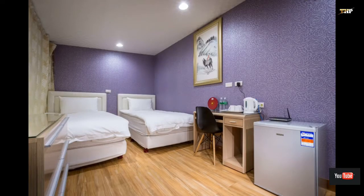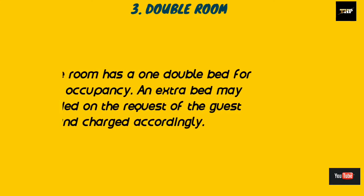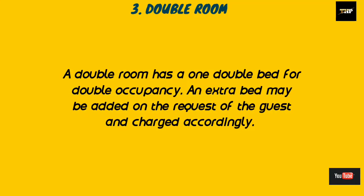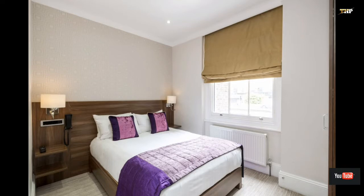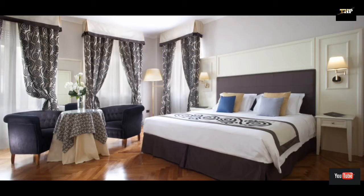The third one is the double room. A double room has one double bed for double occupancy. An extra bed may be added to this room on the request of the guest and charged accordingly. The size of the double bed is four and a half feet by six feet. Here are some images of the double bedroom.